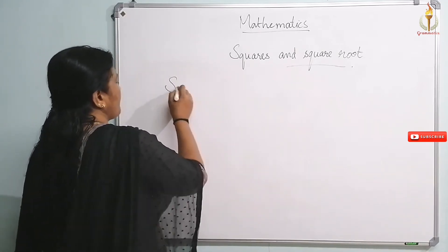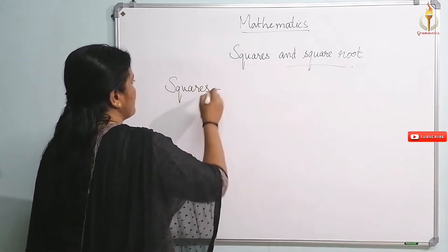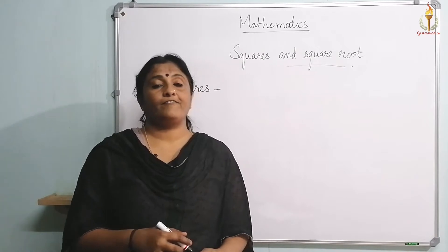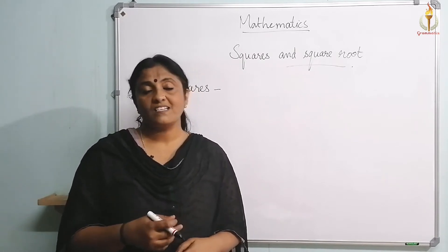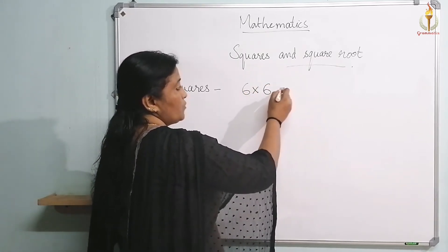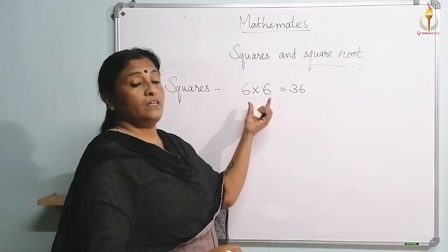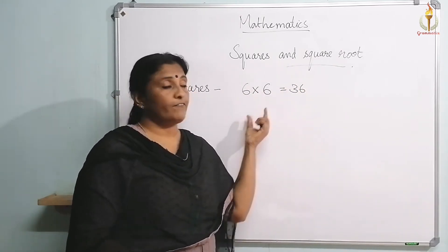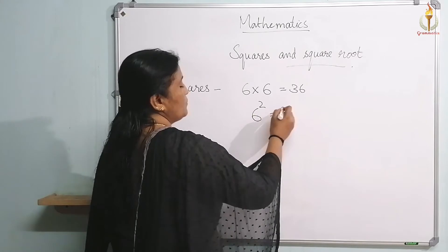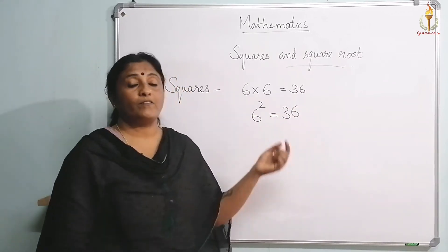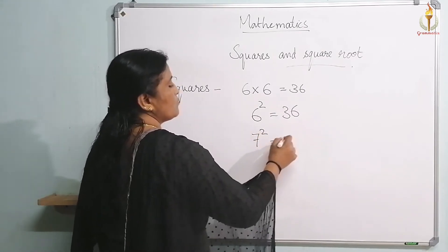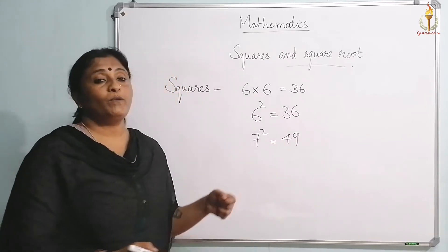Starting with squares — what do you mean by a square? When a number is multiplied by itself, the product that we get is called the square of that number. For example, if I am taking 6 multiplied by the same number, you get 36. So 6 squared is equal to 36. Similarly, the square of 7 is equal to 49.